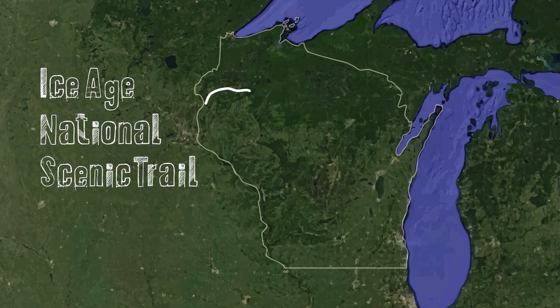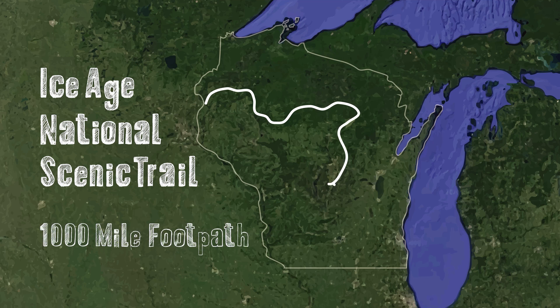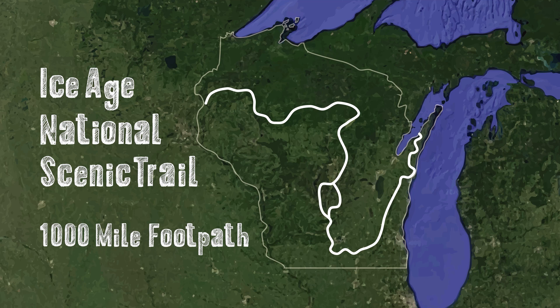Hi, my name is Amy. I'm the Outreach and Education Manager with the Ice Age Trail Alliance. More than 12,000 years ago, ancient glaciers sculpted Wisconsin's landscape. The Ice Age National Scenic Trail is a thousand-mile footpath that traces the path of the Ice Age from the last glaciation. These glacial landforms are considered some of the world's finest, and you can see them right here along the Ice Age Trail. Today, we're going to talk about six glacial landforms you can see along the Ice Age Trail. Let's get started.